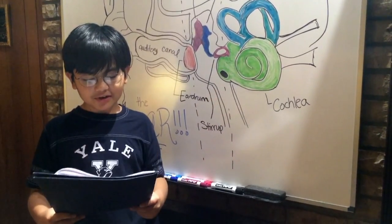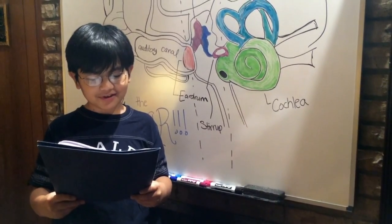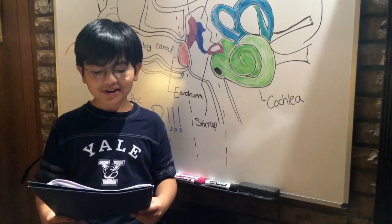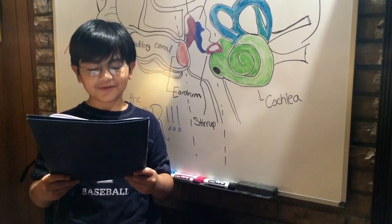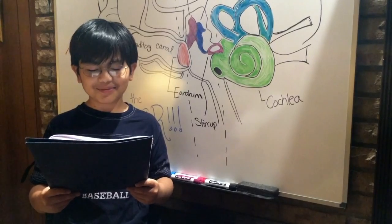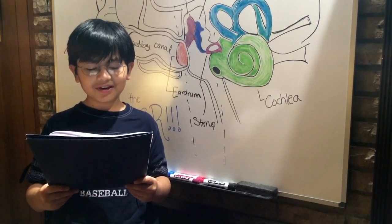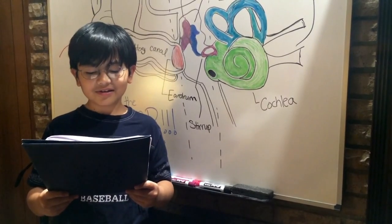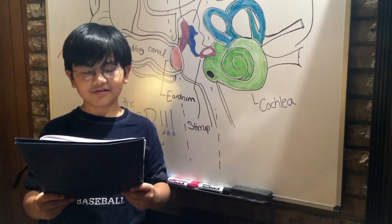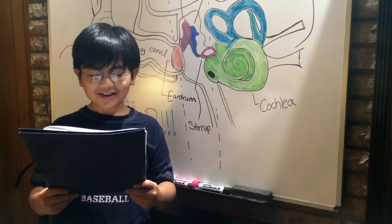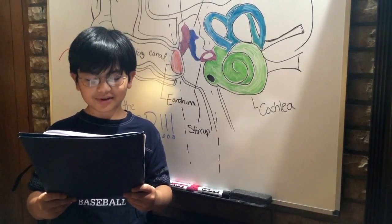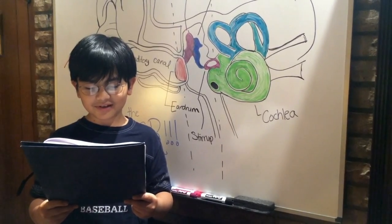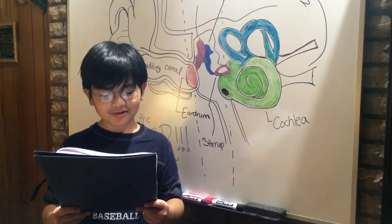The cochlea is a bony tube that contains fluids and neurons. The pressure against the cochlea makes the liquid inside the cochlea move. Tiny hairs inside the cochlea pick up the motion. These hairs are attached to sensory cells. The sensory cells turn the sound vibrations into neuronal impulses. The auditory nerve carries these impulses to the brain, where this neuronal input goes to the hearing areas of the cerebral cortex.